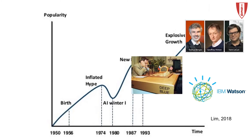In 1997, Deep Blue beat Garry Kasparov. In 2006, the University of Toronto developed deep learning. In 2011, IBM's Watson won Jeopardy. In 2018, Yoshua Bengio, Geoffrey Hinton, and Yann LeCun won the ACM Turing Award.